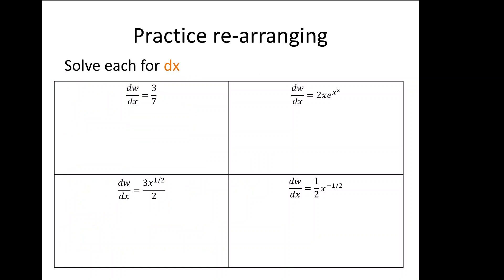In the next set of problems, I want to practice rearranging expressions to isolate one component — specifically, the dx term. Here we have dw by dx instead of dy by dx. In the top-left example, I multiply both sides by dx and by 7, getting 7dw equals 3dx, then divide both sides by 3. So dx equals 7dw over 3. For the top-right example, multiplying both sides by dx gives dw equals 2x times e to the x-squared times dx, then dividing by 2xe to the x-squared gives dx equals dw over 2xe to the x-squared.